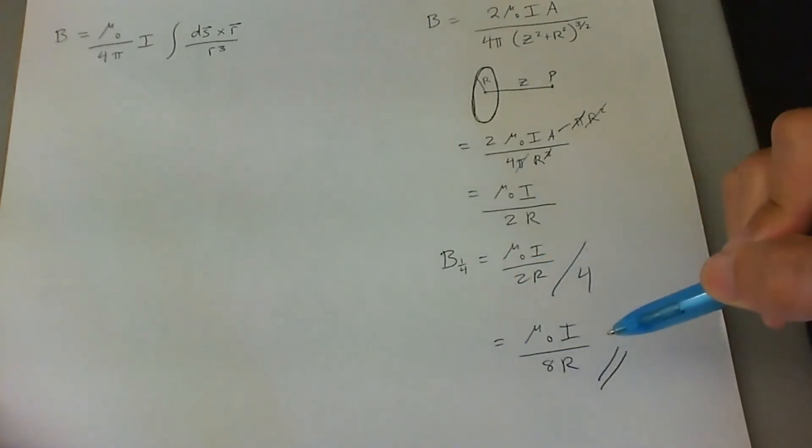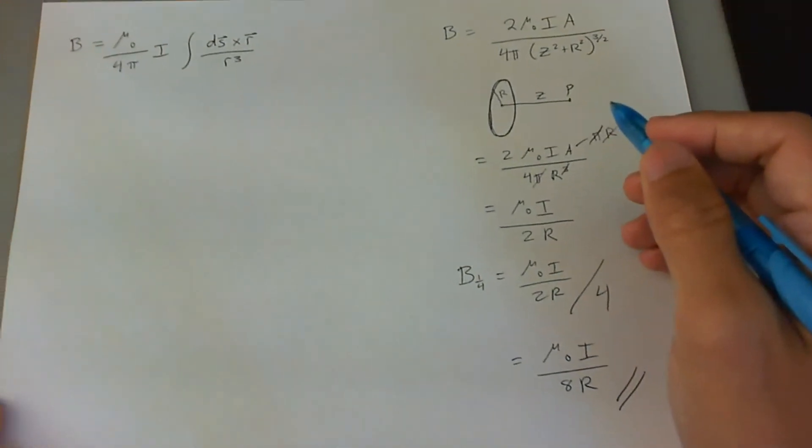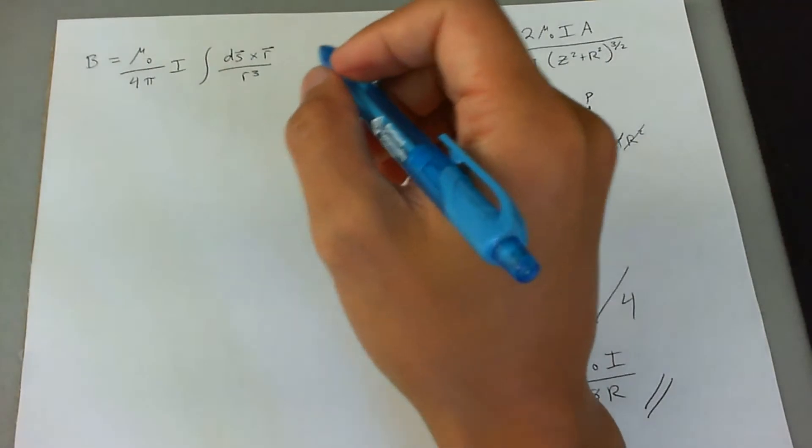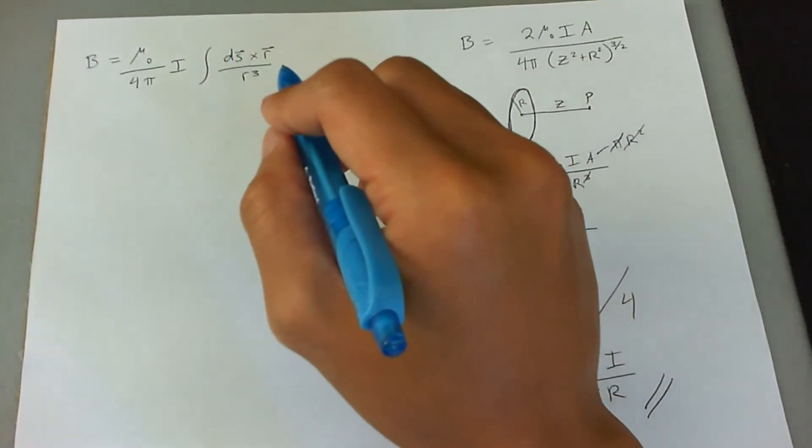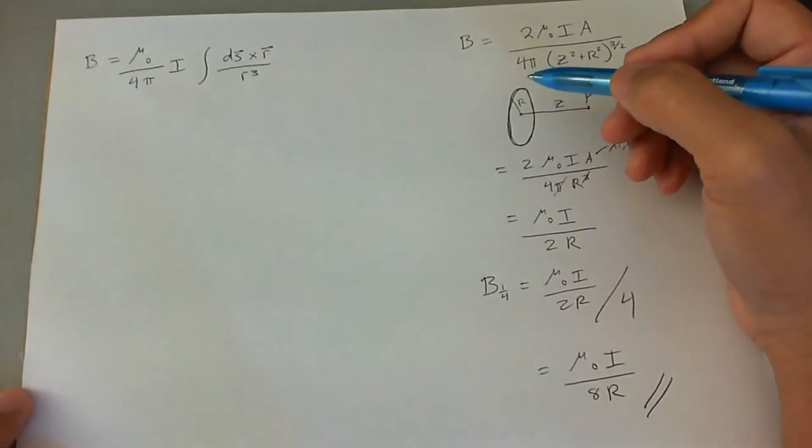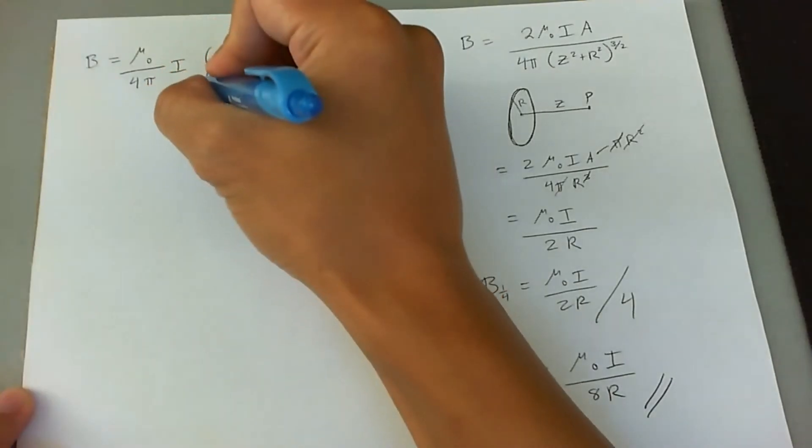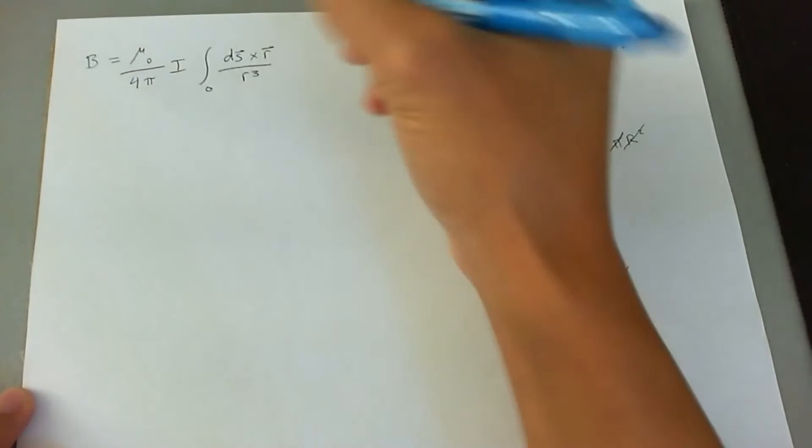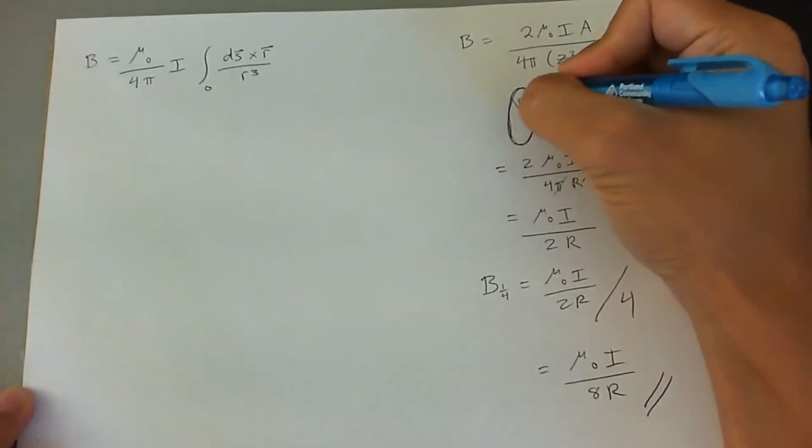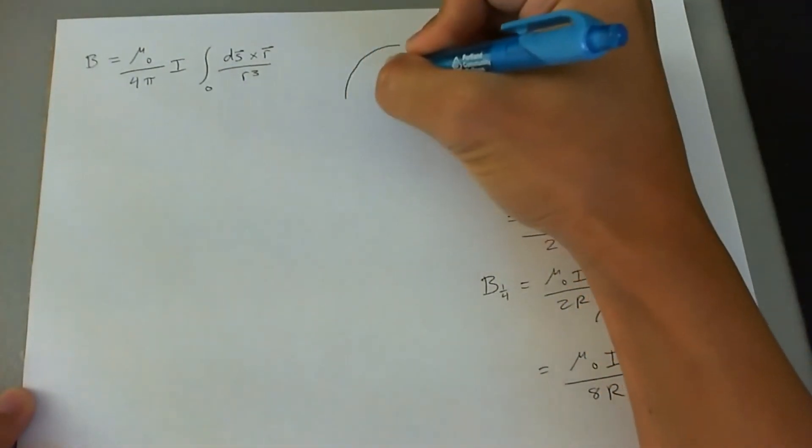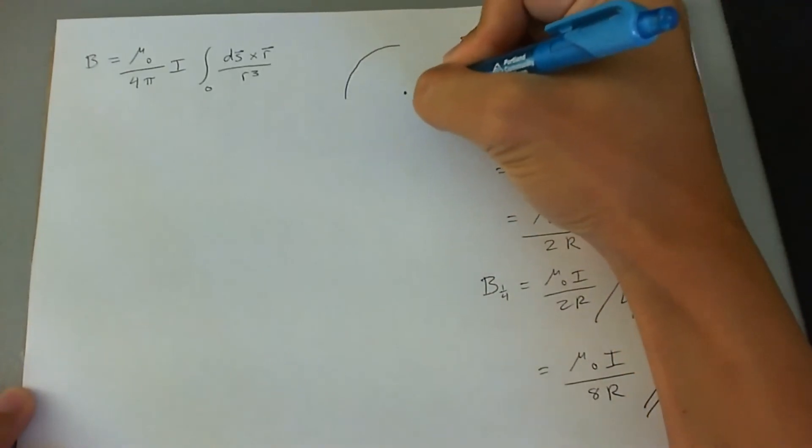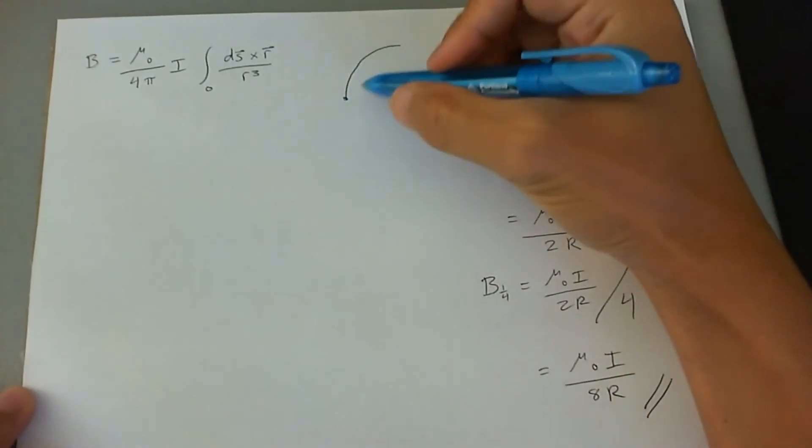Now let's go ahead and verify that with Biot-Savart law and use a little bit of calculus. In this case, we're going to go from a ds that goes from zero to a fourth of this. Let's draw a little picture here.